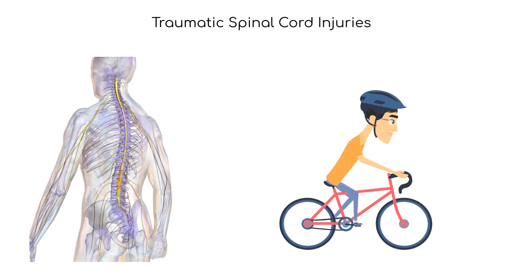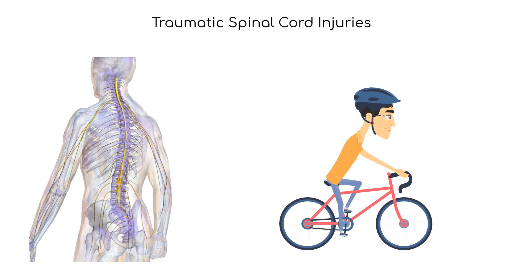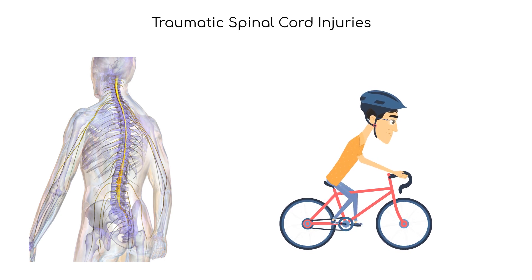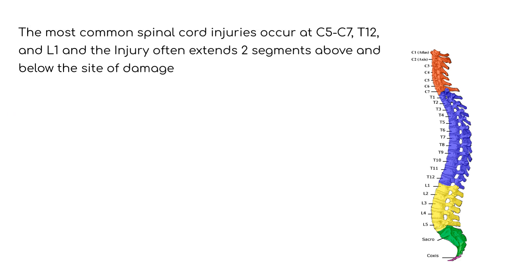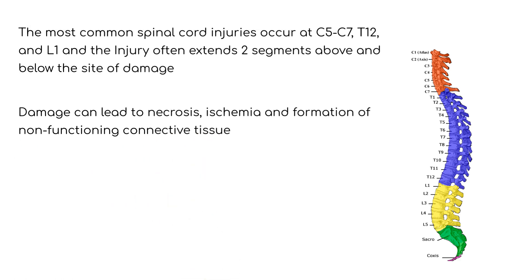Traumatic spinal cord injuries occur mostly in young male adults, with auto accidents and violent events as the leading causes. The most common spinal cord injuries occur at C5 to C7, T12, and L1, and the injury often extends two segments above and below the site of damage.